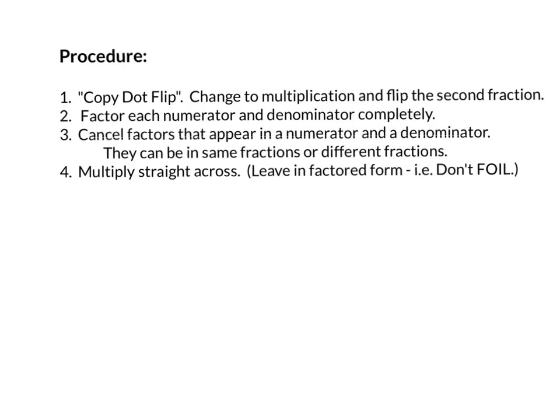Our procedure to divide rational expressions: we're going to start by using our rule for dividing fractions — copy.flip. We're going to copy the first fraction, change our operation to multiplication, and flip the second fraction. From there, we're going to factor each numerator and denominator completely, cancel factors that appear in a numerator and a denominator — remember they can be in the same or different fractions — then multiply straight across. We can leave in factored form, so we do not need to foil or distribute.